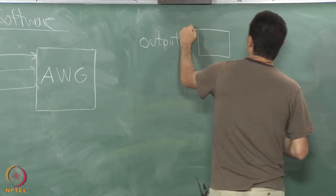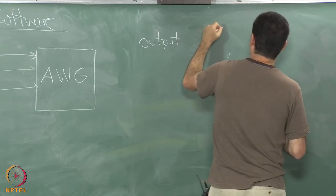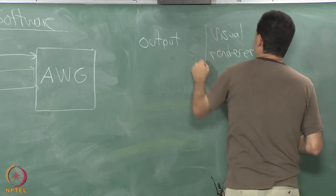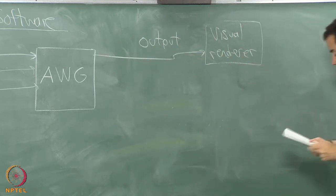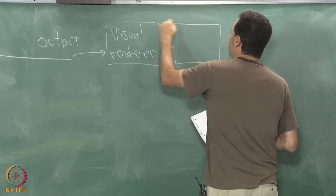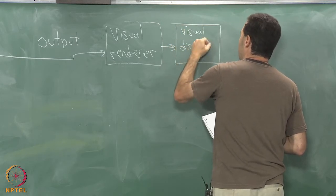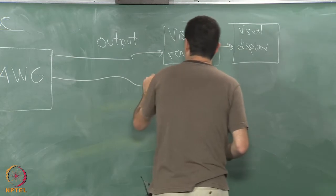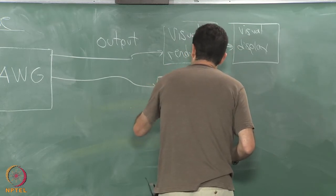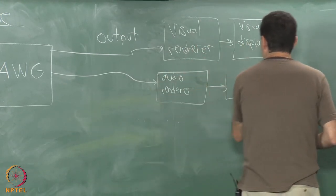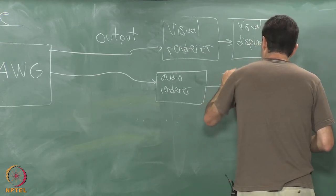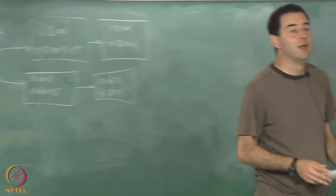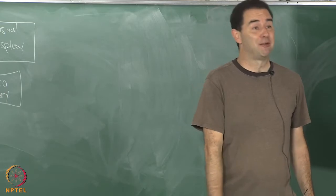For output, there could be a visual renderer, and then eventually this goes out to a visual display. We talked about different examples of that. It doesn't really matter which sense, so we can have another one that is an audio renderer. If you want to have a haptic renderer, you can have a haptic display that gives you force feedback if you like.